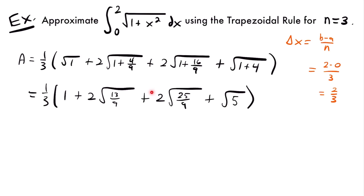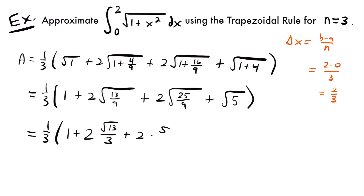We can simplify further before using a calculator. This equals 1 third times 1, plus 2 times the square root of 13 divided by 3 — since the square root of 9 is 3 — plus 2 times 5 over 3, since the square root of 25 is 5 and the square root of 9 is 3, plus the square root of 5. Plugging this into a calculator, we find this equals approximately 2.99103.